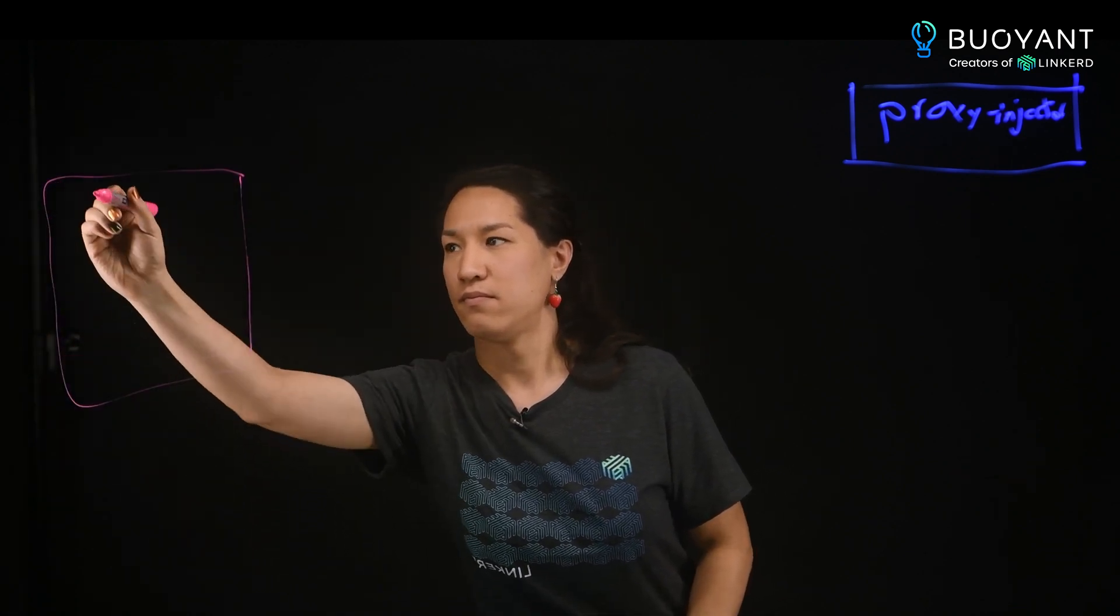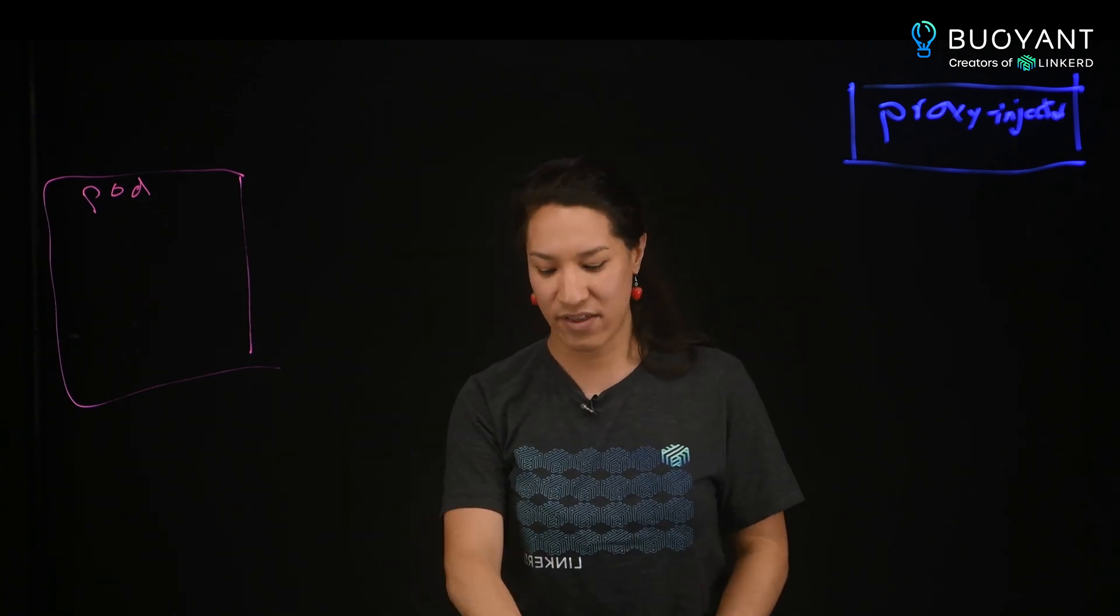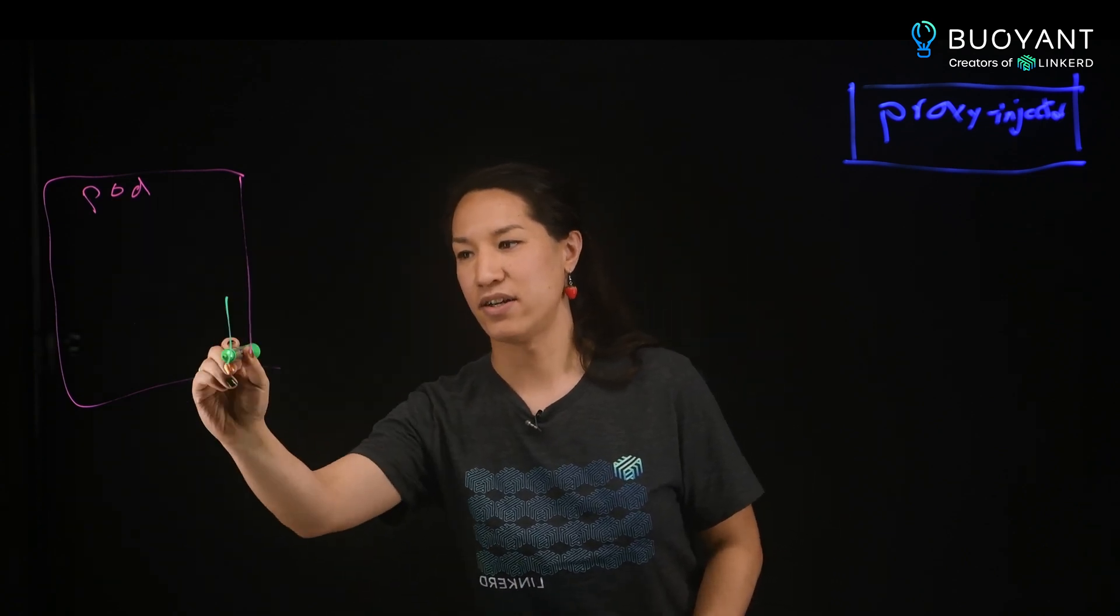So when a new pod is created, this mutating webhook controller will add the Linkerd proxy as a sidecar container to that pod.